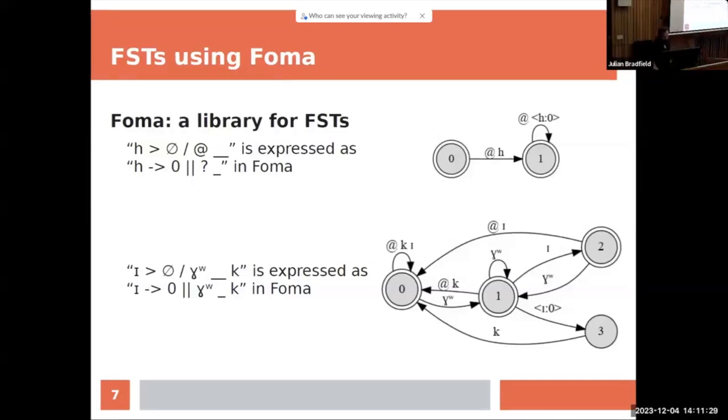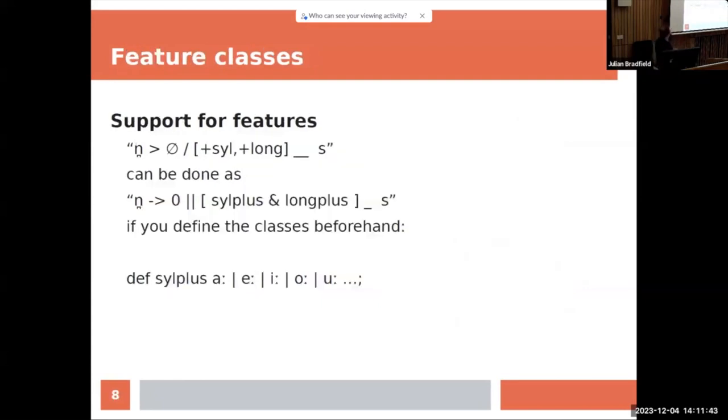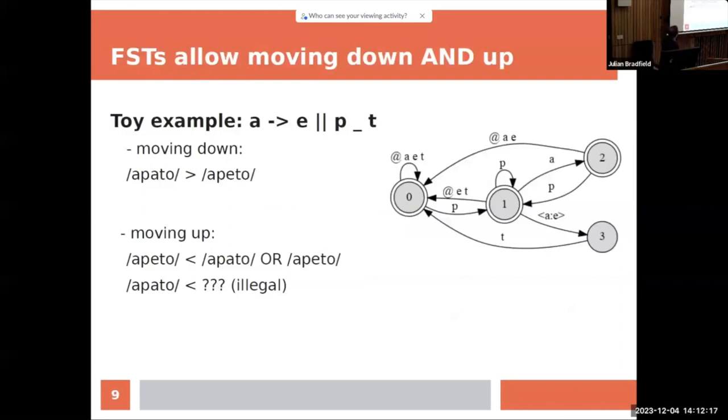So, we see that we already get fairly complex output for rules that are trivial for a linguist, but that is the case. There is support for feature classes, so if you want to say a vowel disappears after something that is plus syllabic, plus long, and before an s, you can write it pretty much the same way as it is written, as long as you define what it means to be plus syllabic and plus long. So you can define feature classes, and you can do nice things like this. So now that you've defined rules, there's this concept called going down and up, which I guess is like you go down in time and up in time.